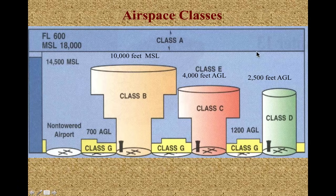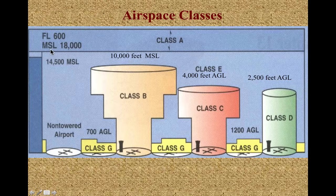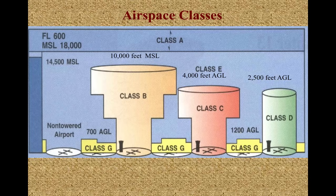Just as an overview — I don't want you to get overwhelmed, because we'll unpack each one. Class A, or alpha, is very high airspace. It starts at 18,000 feet MSL — that's mean sea level — and extends up to flight level 600, which is 60,000 feet. Once we get above 18,000, we put things in terms of flight levels, dropping the two zeros. When you're flying in an airliner, you're up in Class Alpha. To be in Class A, you have to be IFR and on an IFR flight plan. Also, above 18,000 feet, all altimeters need to be set to 29.92.